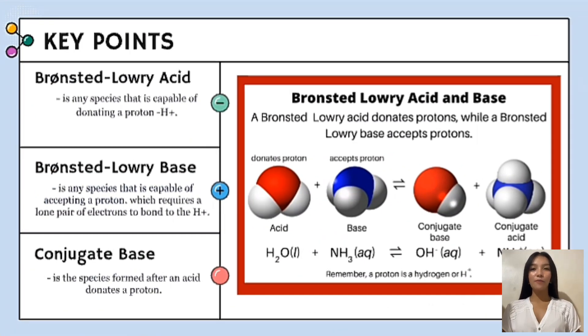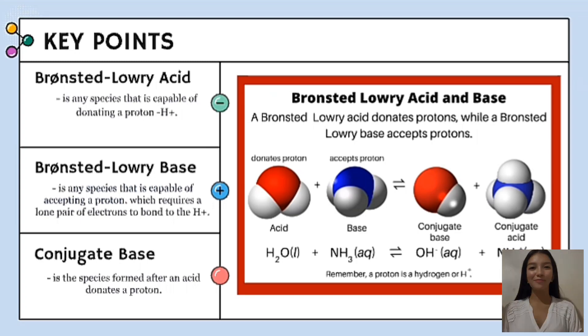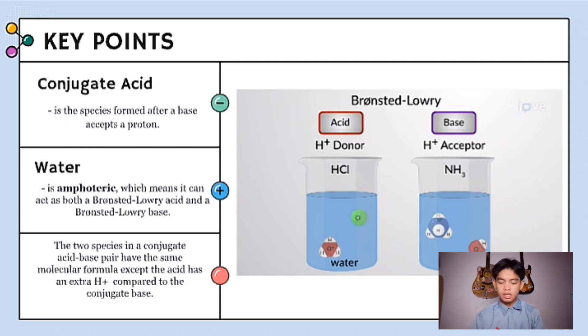A Bronsted-Lowery acid is any species that is capable of donating a proton, H⁺. A Bronsted-Lowery base is any species that is capable of accepting a proton, which requires a lone pair of electrons to bond to the H⁺. A conjugate base is the species formed after an acid donates a proton. A conjugate acid is the species formed after a base accepts a proton, transforming it into its conjugate acid.